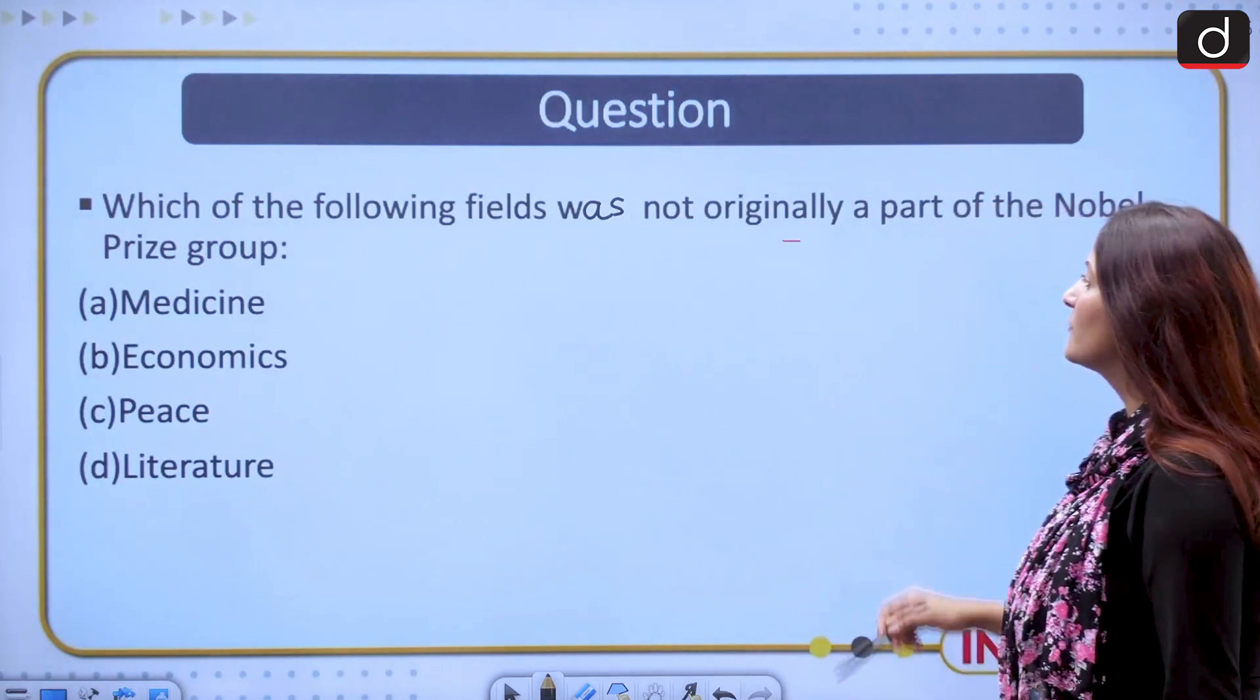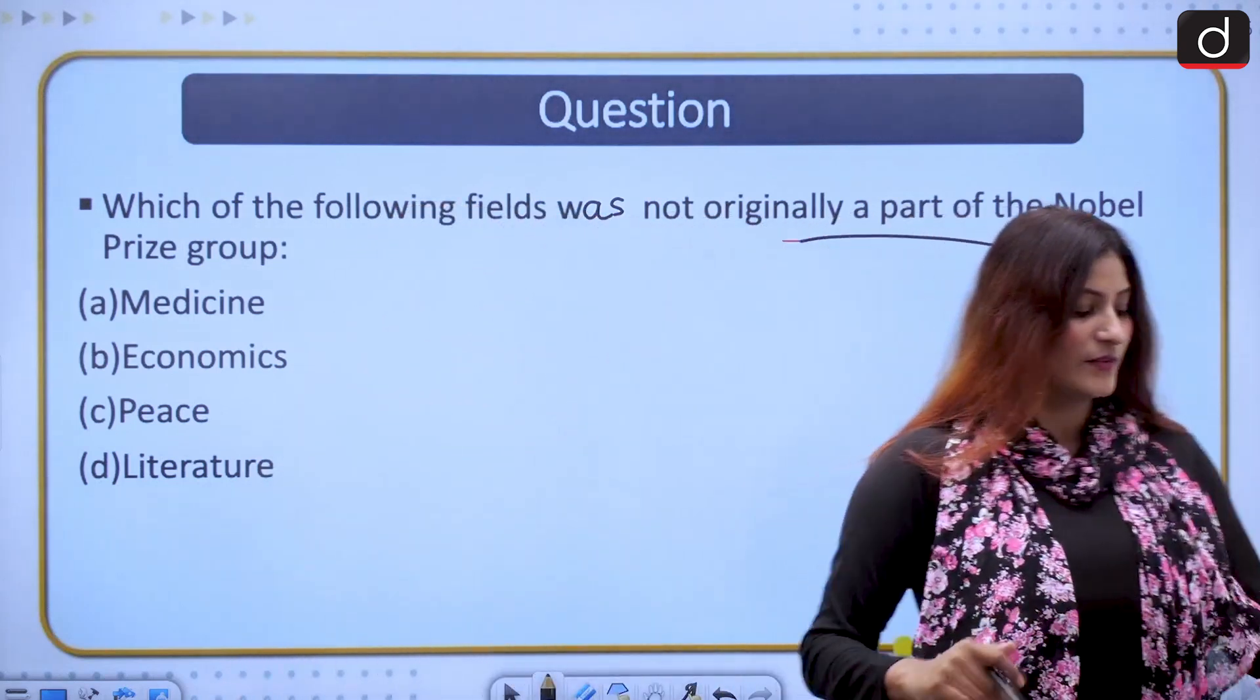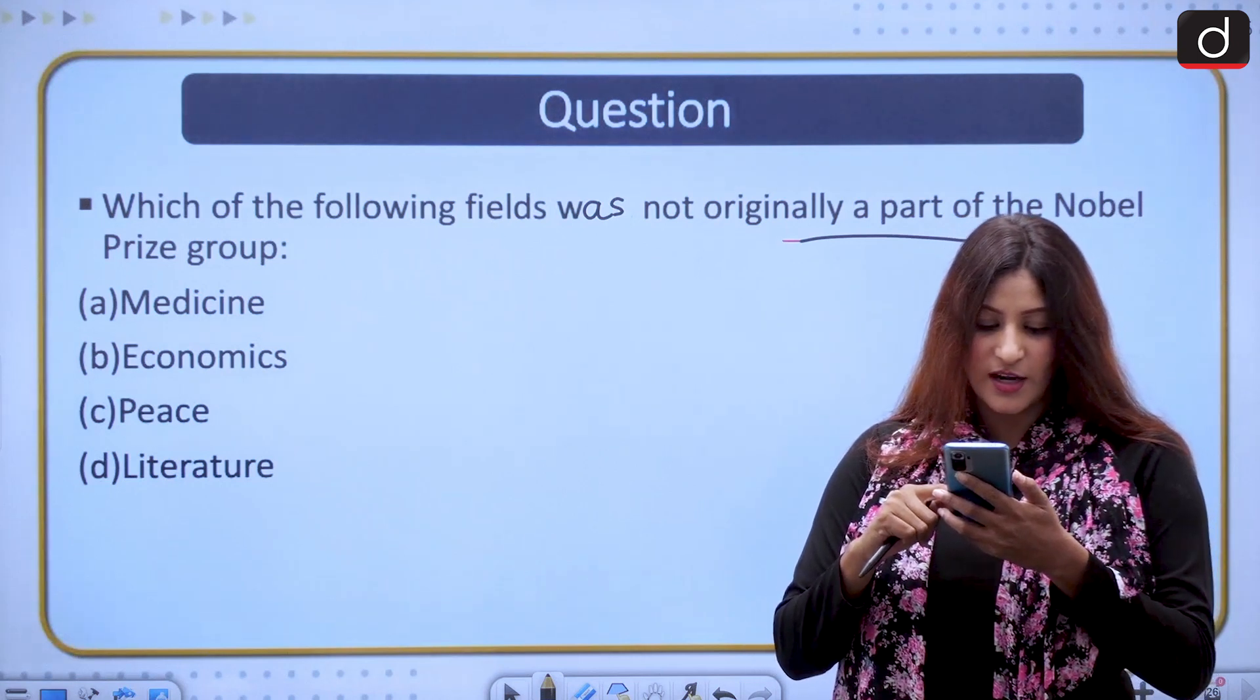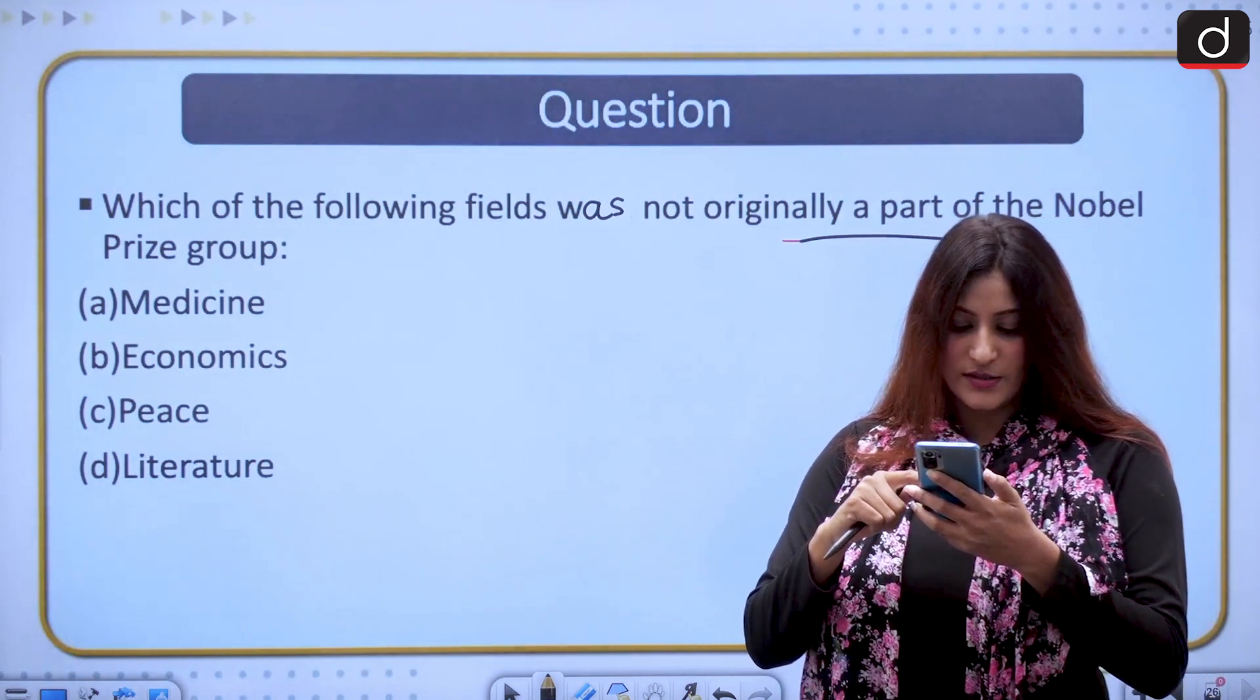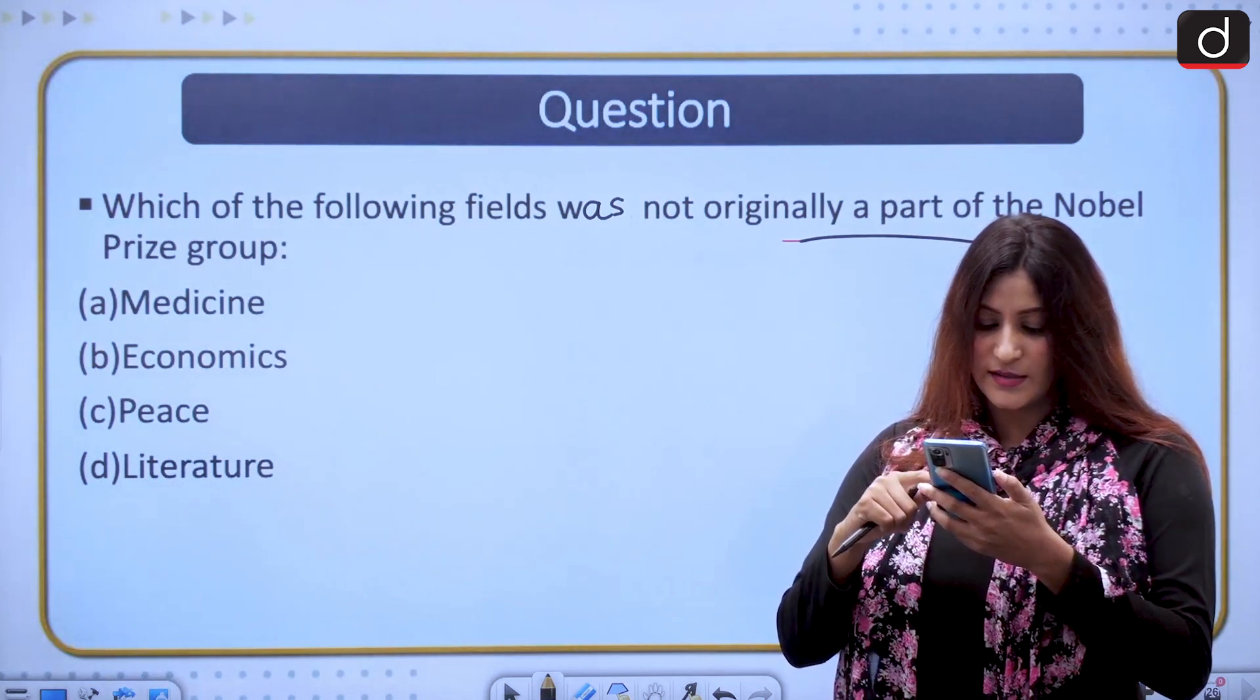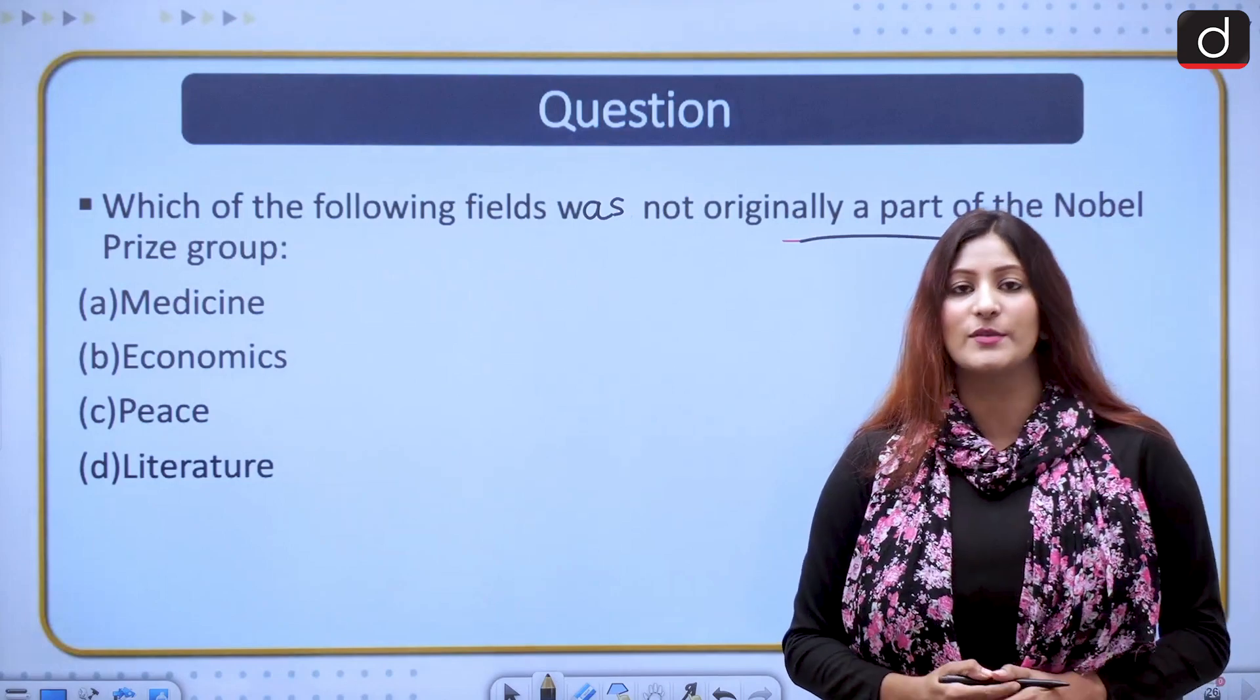Now let us look at the question. Which of the following fields was not originally a part of the Nobel Prize group? Medicine, Economics, Peace or Literature? You have to answer this. Let me take the names of those who have answered my last question correctly. It was 2019 in my last segment. Simran has answered it correctly. Answered this question as well. I will take your names in the next segment. Thank you so much for watching.